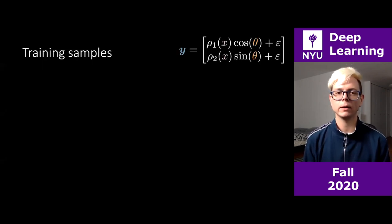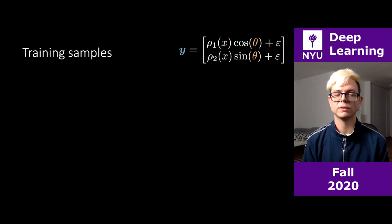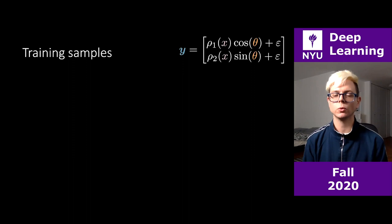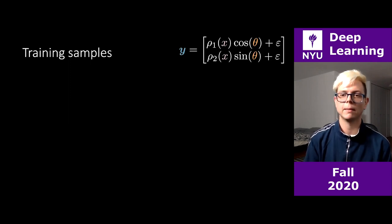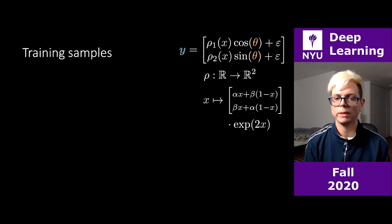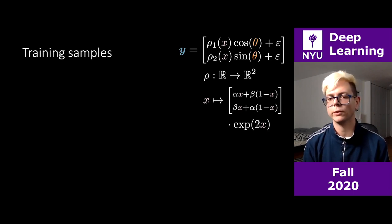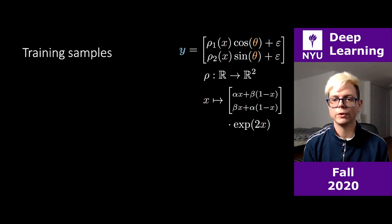Let's look at what kind of data we're working on and why we need these energy-based models. We can think about our data bold-y as having two components: y1 and y2. y1 is going to be rho_one, a function of x — my input multiplied by the cosine of theta, some angle we don't know, plus some noise epsilon. Then rho_two is again a function of x multiplied by the sine of theta, plus noise epsilon. Rho maps the input from one-dimensional R into R², mapping x into components alpha*x + beta*(1-x) and beta*x + alpha*(1-x), all multiplied by an exponential of x.